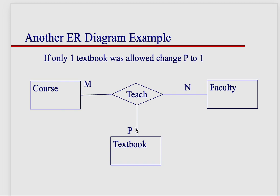Well, it's zero to many, because some faculty members may have nothing, some may have one, some may have multiple textbooks for a course that you assign. So in that case, I put a P, because M and N were taken, so I used P.